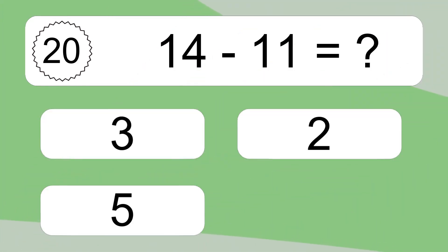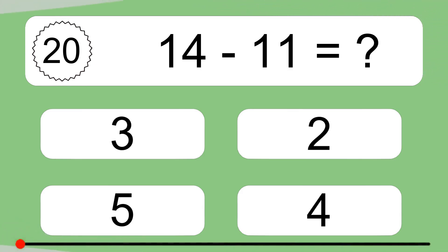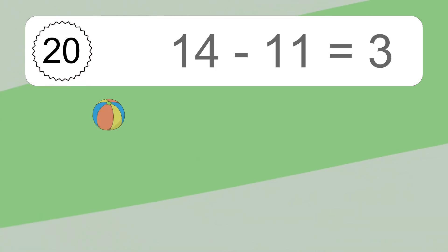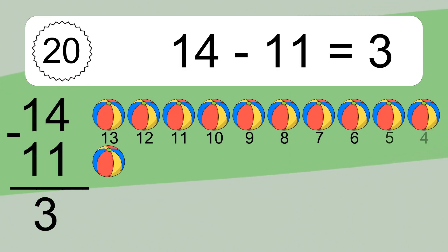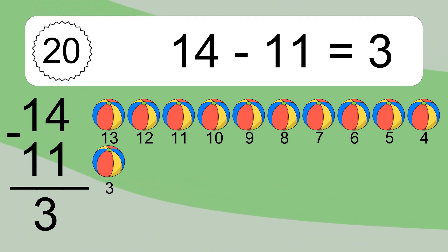14 minus 11 equals what? 14 minus 11 equals 3. Let's count it: 13, 12, 11, 10, 9, 8, 7, 6, 5, 4, 3.